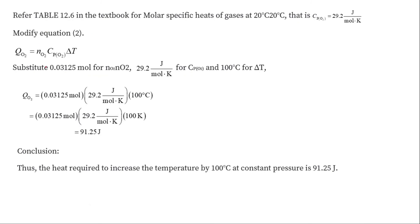From here, we find the value of heat required: Q = number of moles × Cp of O₂ × ΔT. This comes out to be 91.25 joules. Therefore, the heat required to increase the temperature by 100 degrees Celsius at constant pressure is 91.25 joules.